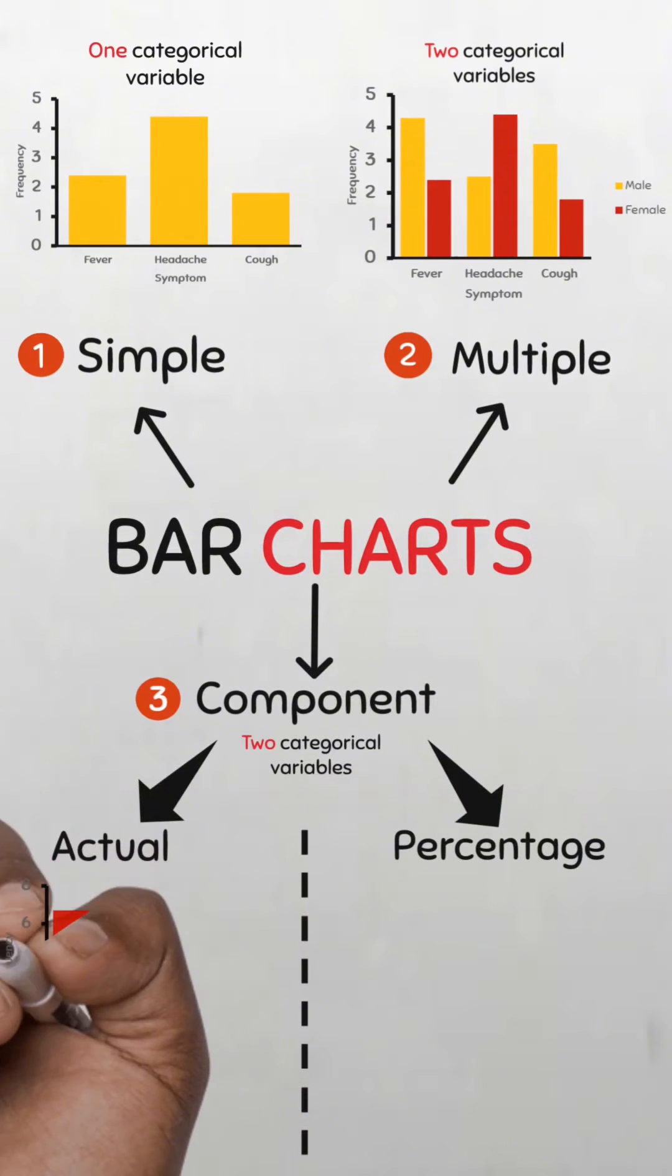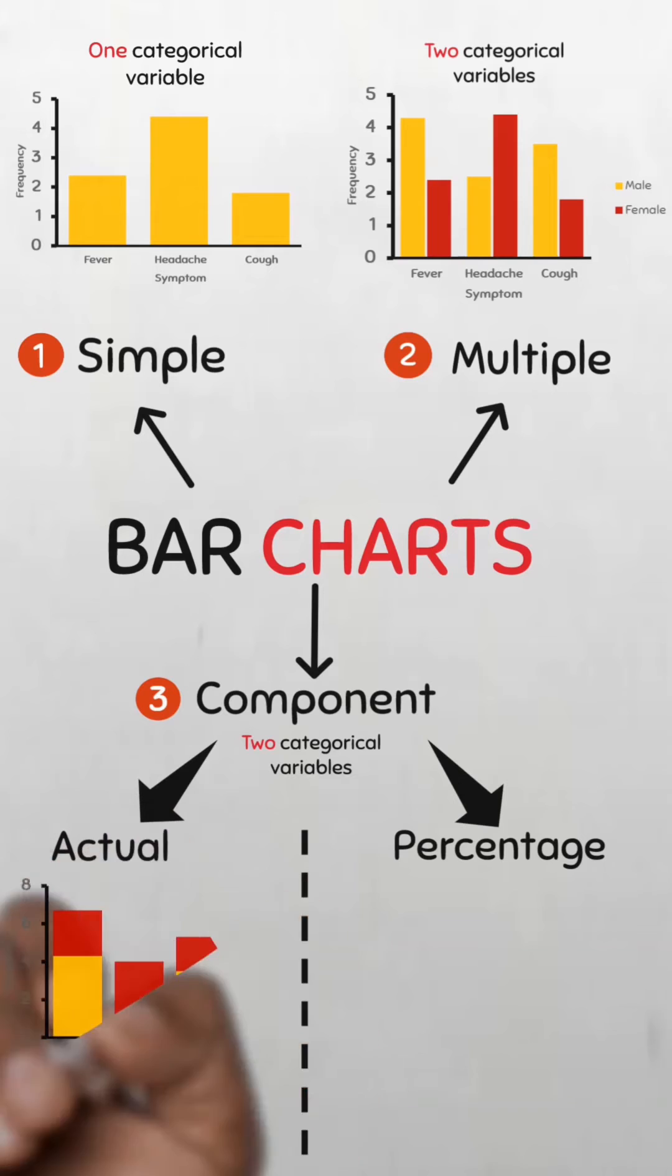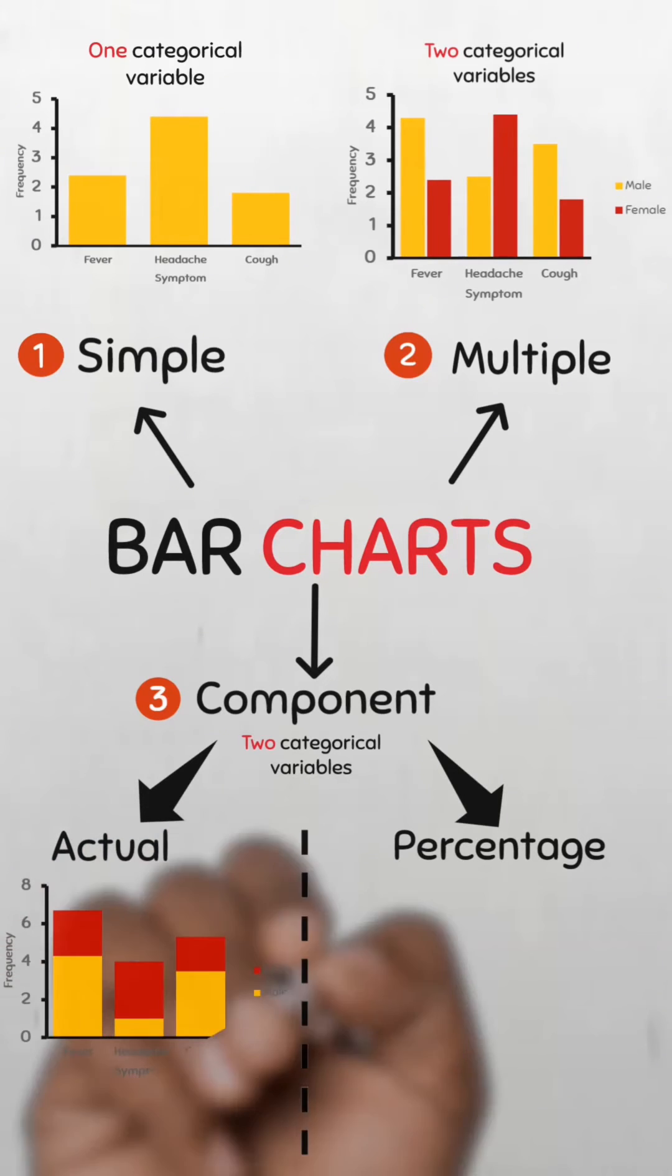In the actual component bar chart, the actual frequency or the value of the main category represents the overall height of each bar.